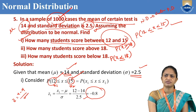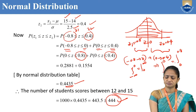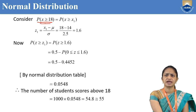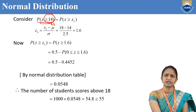The next question is how many students score above 18. That means probability of X greater than or equal to 18. Computing z1: 18 minus mu 14 divided by sigma 2.5, after simplification z1 equals 1.6.